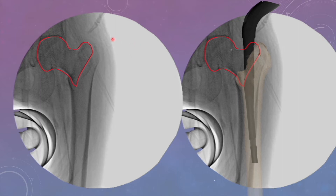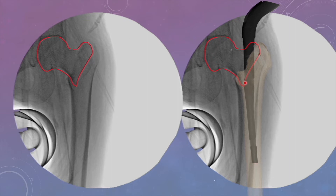Once you have created the entry, decide the direction of proximal reaming. The simplest way is to imagine transposing the nail over the proximal fragment — forget the distal fragment and think about the proximal fragment's alignment with the nail. The lower part of the nail represents the femoral shaft. You need to restore the relationship between the distal nail and the proximal fragment. If you put the nail in the correct trajectory, the screw will be in the inferior quadrant with overall valgus alignment — that is good. This proximal reaming direction is required for this fracture type.